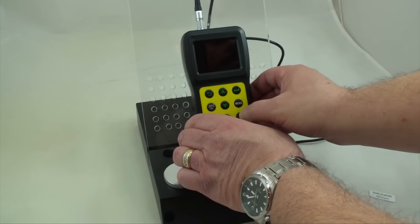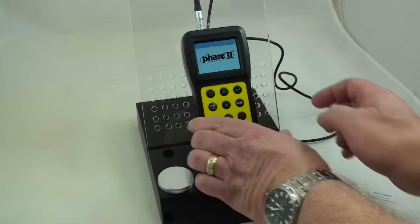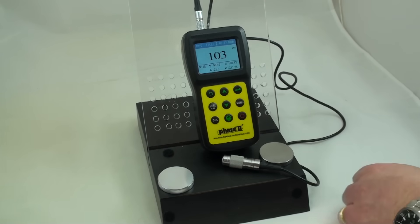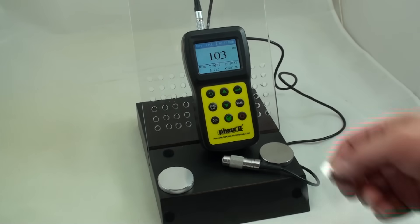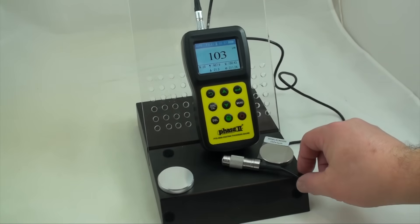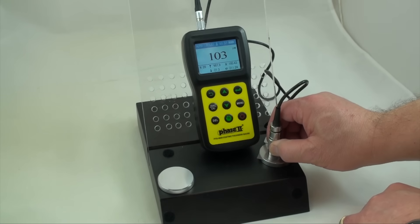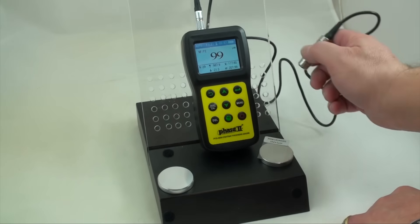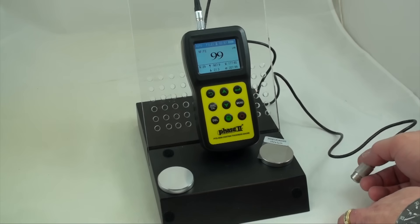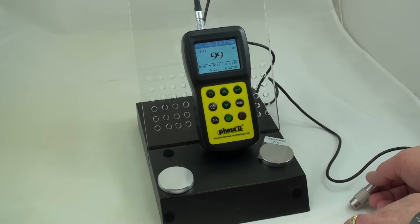Power on the unit. Place a test shim on one of the sample substrate blocks provided. Apply the probe directly to the shim area until the unit tones that it has completed its test. Once the thickness value is shown, remove the probe from the surface area.